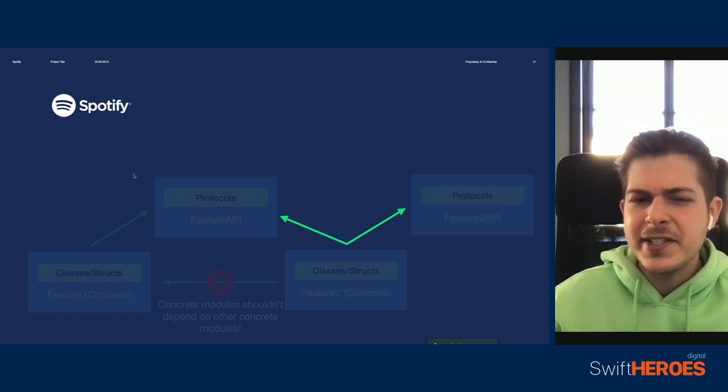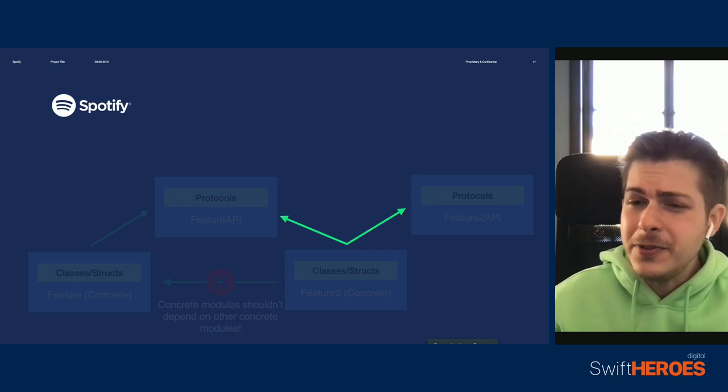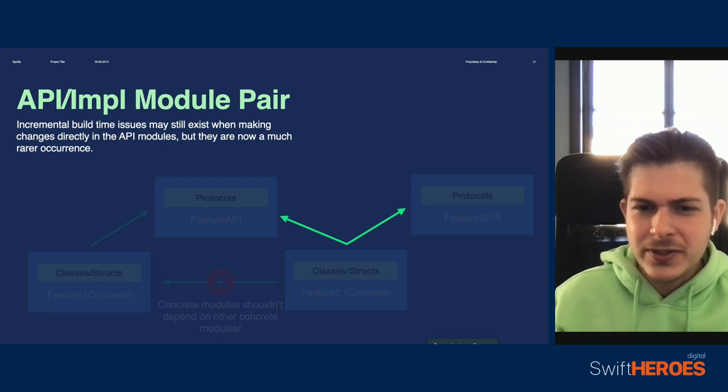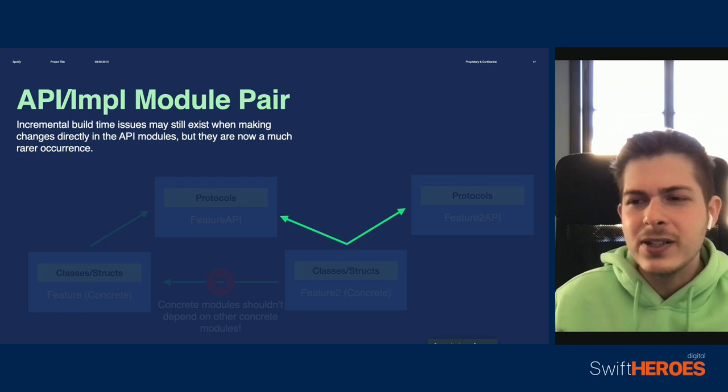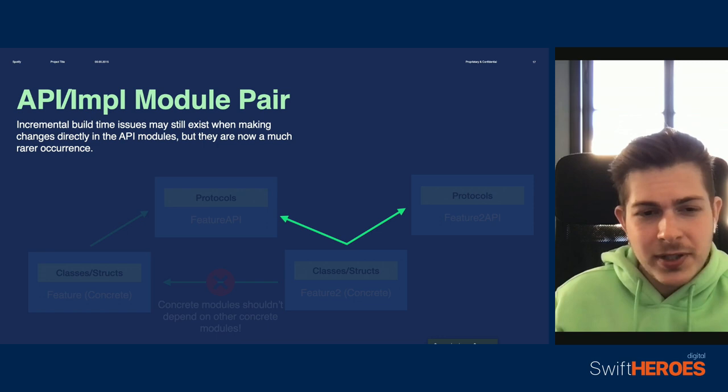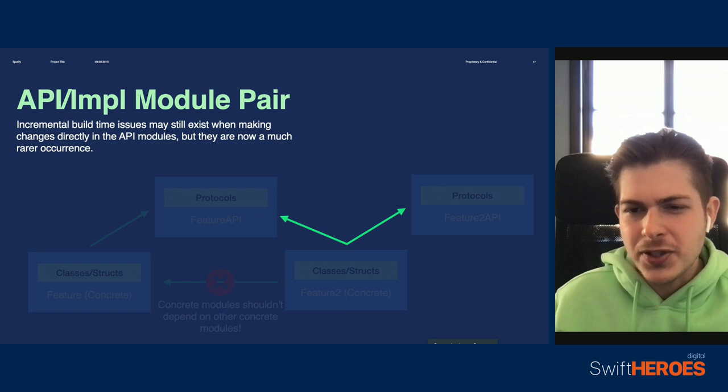Wait a second — aren't these dependencies here still an issue? In theory, yes, but in practice, not really. While the incremental build time problem we talked about still exists here, this division between concrete and API modules will make it a lot less likely. We know that most of our work will be done in these concrete modules, so because they are isolated in the graph, we won't really have any build issues as a result. We may see these issues if we change the APIs themselves, but that should not be a common occurrence. Protocols don't change a lot, so we find API targets to be very stable.